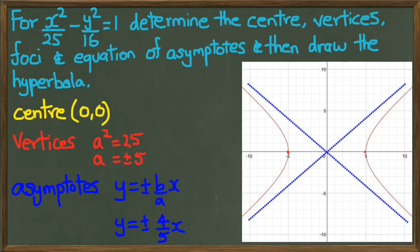And as you can see, there's our graph. The blue lines represent the asymptotes. And the two red dots at 5 and negative 5 represent the vertices. And the yellow, you can't really see it, but it is at the center where 0 and 0 is.